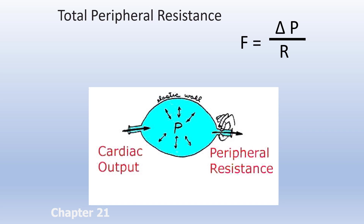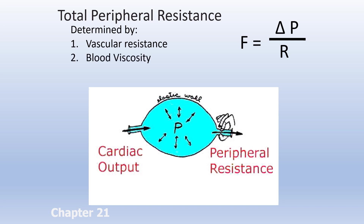What we're talking about here — all of these pressures — is termed total peripheral resistance. In your book there are lots of different terms depending on if we're talking about pressure in the aortas, the veins, or the total circuit, but we're going to call it total peripheral resistance. This is determined by three very specific things in vessels: vascular resistance, blood viscosity, and turbulence. We're going to look at these three things in the next three slides.